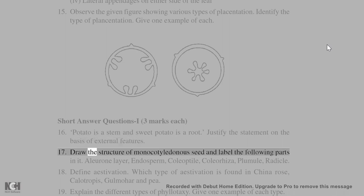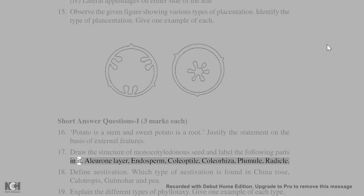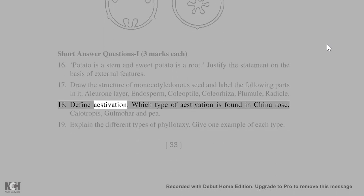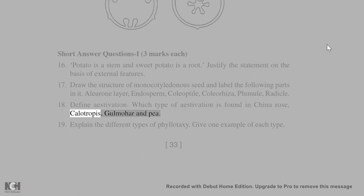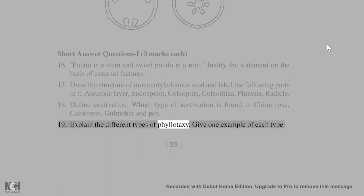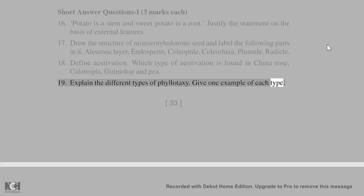17. Draw the structure of a monocotyledonous seed and label the following parts: aleurone layer, endosperm, coleoptile, coleorhiza, plumule, radicle. 18. Define aestivation. Which type of aestivation is found in China rose, Calotropes, Gulmohar, and pea? 19. Explain the different types of phyllotaxy and give one example of each type.